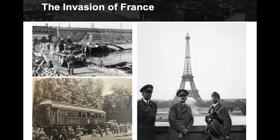Here's the railroad car where they signed the armistice — the exact same car and spot where World War One ended and Germany signed the capitulation. This was a great victory for Hitler. Here's a famous picture of Hitler by the Eiffel Tower in Paris. What Germany could not accomplish in four years of war in World War One — reaching Paris and taking France — Hitler did in a couple of weeks.